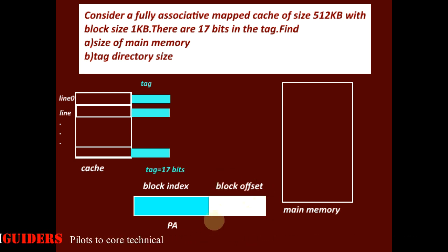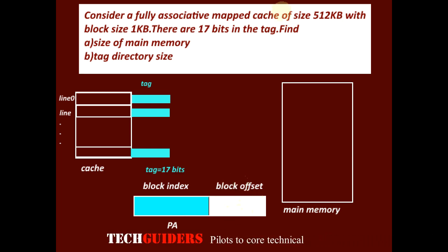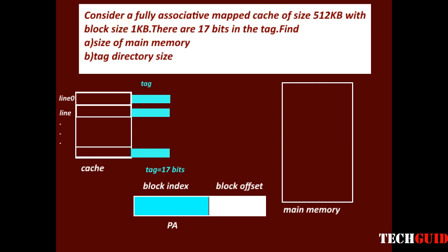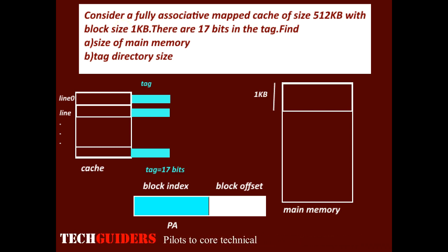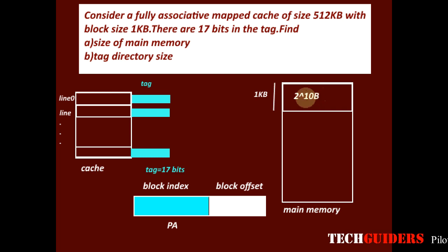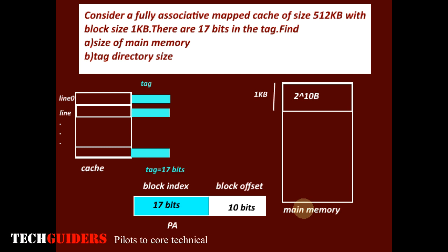If we can find the number of bits for the block offset, we can find the total bits for the physical address and thereby the total size of the main memory. The size of the cache block is given as 1KB, and the size of the main memory block is the same as the cache block, hence also 1KB. Assuming byte addressable memory, there are 2^10 bytes within each block, so 10 bits are required to address each byte uniquely. Hence the block offset is 10 bits.